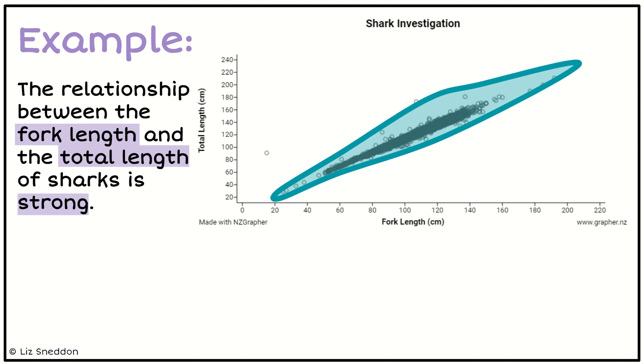And in my sentence I need to be able to put in there the variables, both of the variables, as well as identifying the strength. So I'm saying the relationship between the fork length and the total length of sharks is strong, and now I need to justify that.